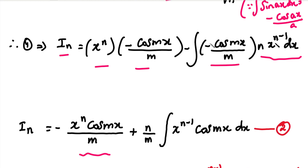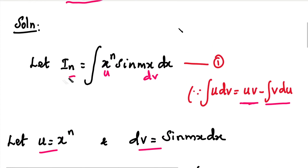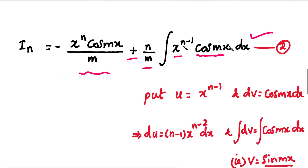There is a minus symbol on the right-hand side. The denominator of m appears in the integral term. The remaining term is x power n minus 1 into cos mx dx. So the reduction formula gives us I suffix n on the left-hand side, and the right-hand side integration is expressed in terms of I suffix n minus 1. We then rearrange.